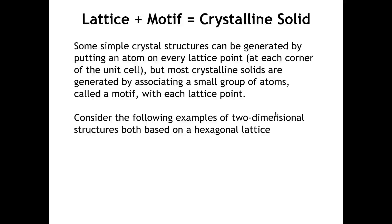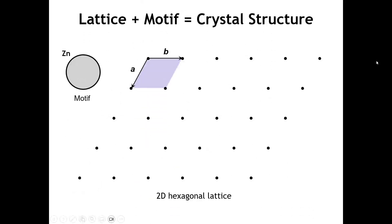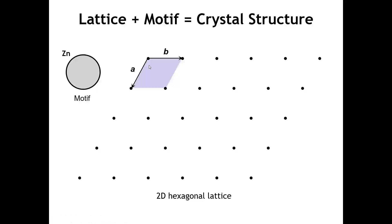A lattice by itself is not yet a crystal structure — it's just the scaffolding. To get a crystal structure, we associate either an atom or a group of atoms with each lattice point. Let's do some simple examples in two dimensions. Starting with a two-dimensional hexagonal lattice, all the black dots represent lattice points. The unit cell is denoted by lattice vectors A and B forming a parallelogram with a 120-degree angle. One rule: all lattice points must be identical, so if one has a zinc atom, all of them must have a zinc atom.